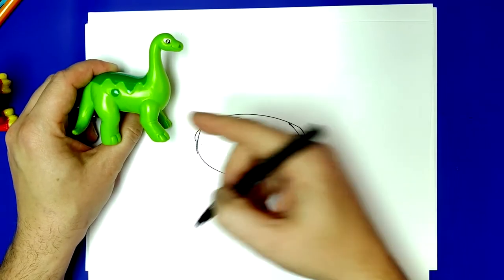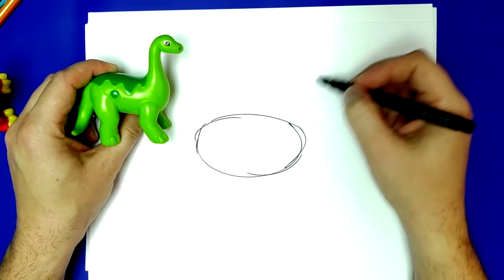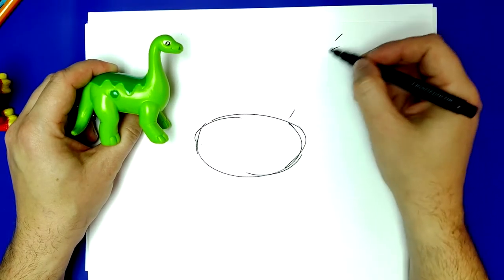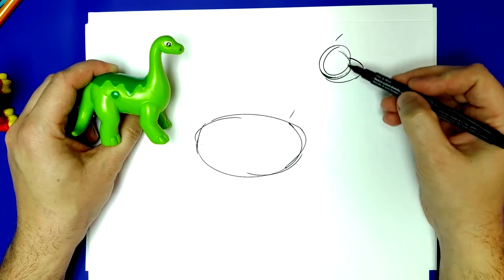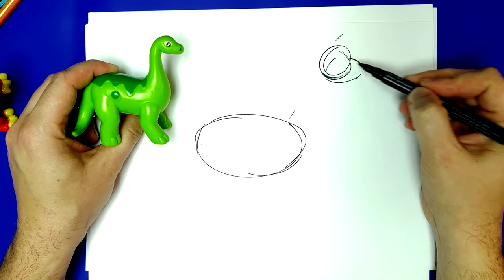There's our first oval, his body. There we have his head, which is a circle and an oval. If you pay attention, you can see two there.